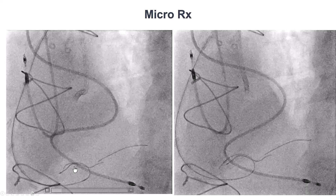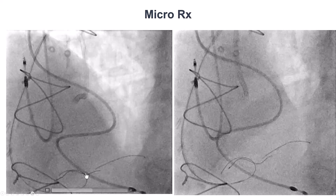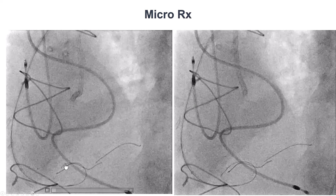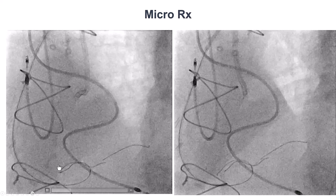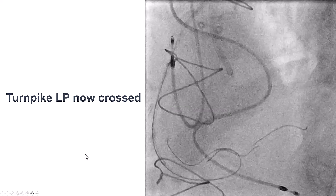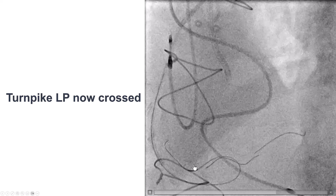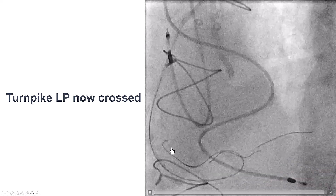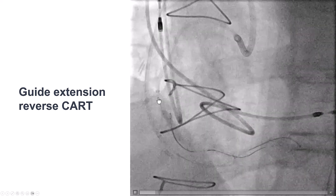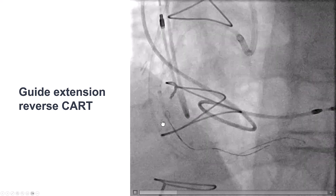We tried the MicroRx and, to our pleasant surprise, it crossed relatively easily. We can see it crossing through the distal RCA into the distal portion. After that, the Turnpike LP also successfully crossed into the distal RCA. We now had overlapping antegrade and retrograde guide wires. We advanced a guide extension to the mid-RCA and performed a guide extension reverse CART.